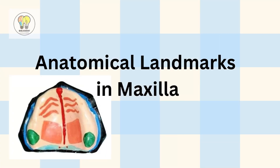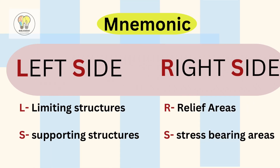Hey guys, welcome back to our channel. Today let's study anatomical landmarks of the maxilla and see how to draw their diagram as well. I will share some mnemonics to remember the landmarks easily. The mnemonic left side right side indicates the four major anatomical landmarks: L for limiting structures, S for supporting structures, R for relief areas, and S for stress bearing areas.